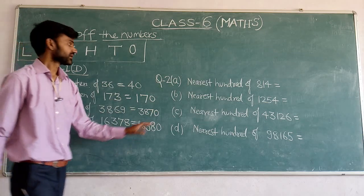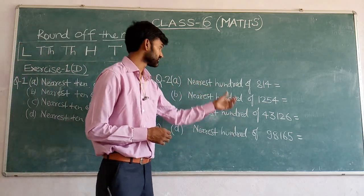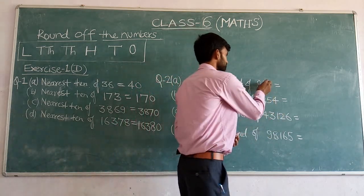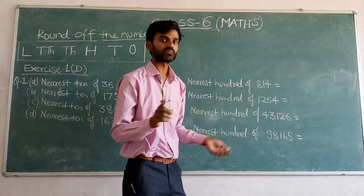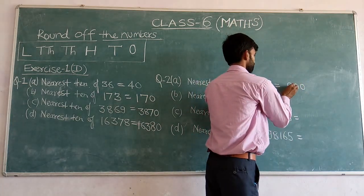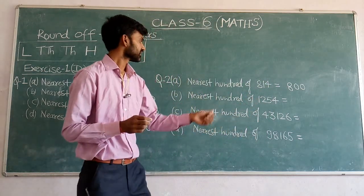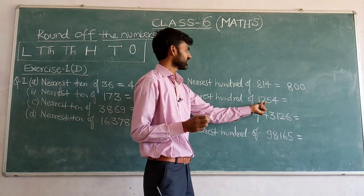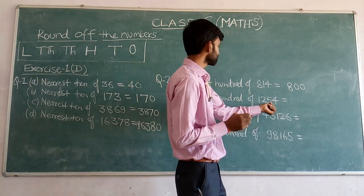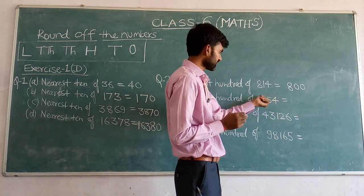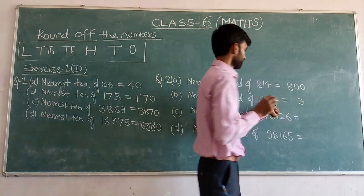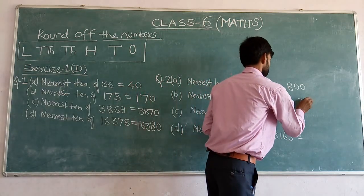In question number 2, we have to find the nearest 100. For 814: look at the tens place — it is 1, which is less than 5. So replace the tens and ones digits by 0 and keep the other digits. The nearest 100 of 814 is 800. For 1254: check the tens digit — it is 5. Since the tens digit is 5, increase the hundreds digit by 1. 2 increases to 3, and replace the right digits by 0. The nearest 100 of 1254 is 1300.